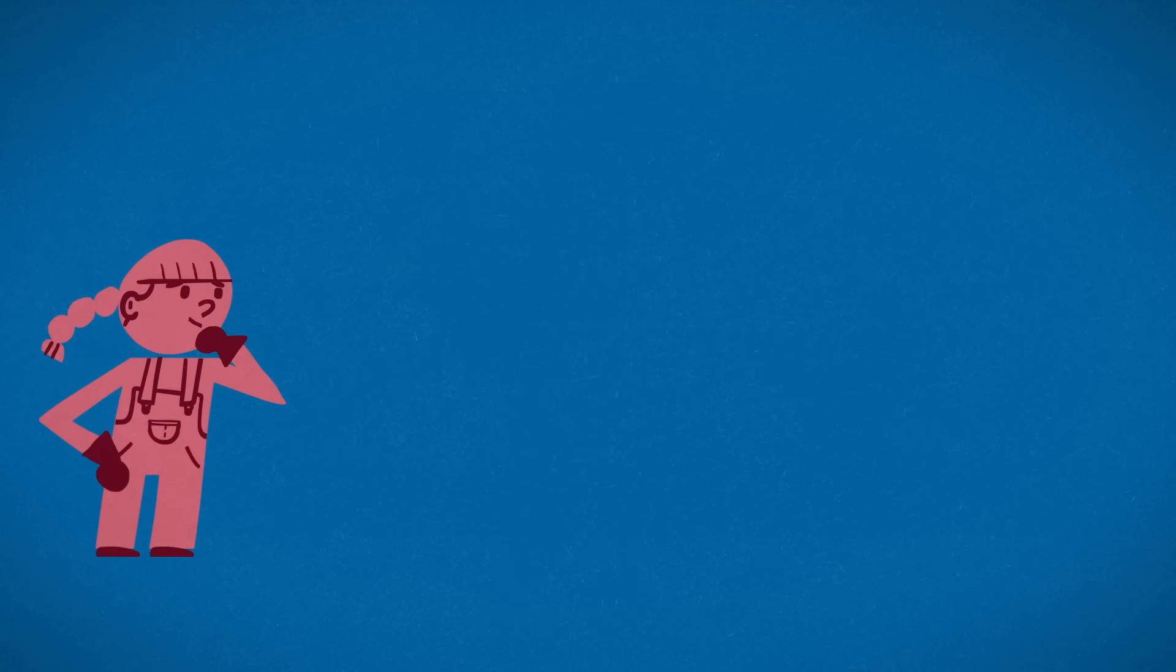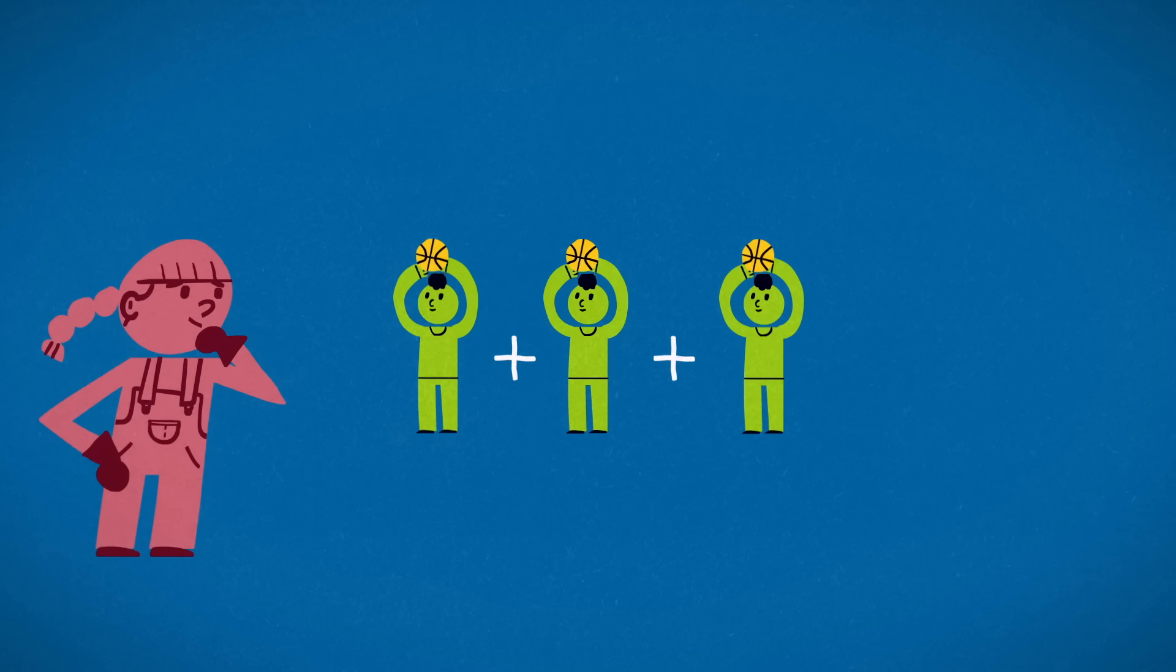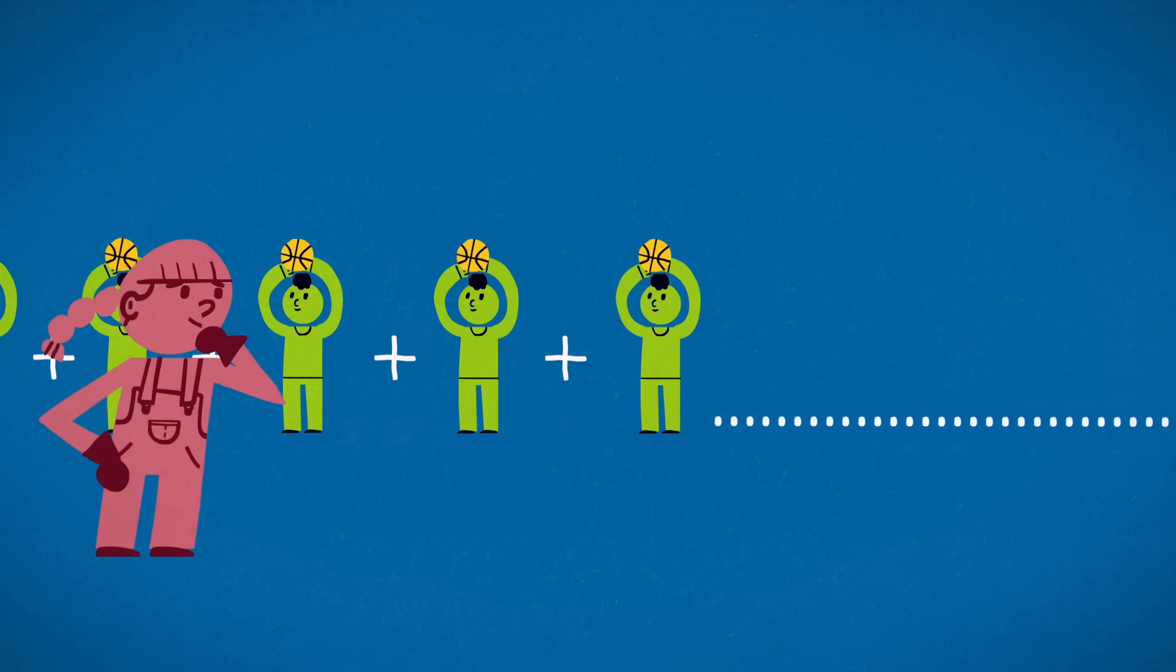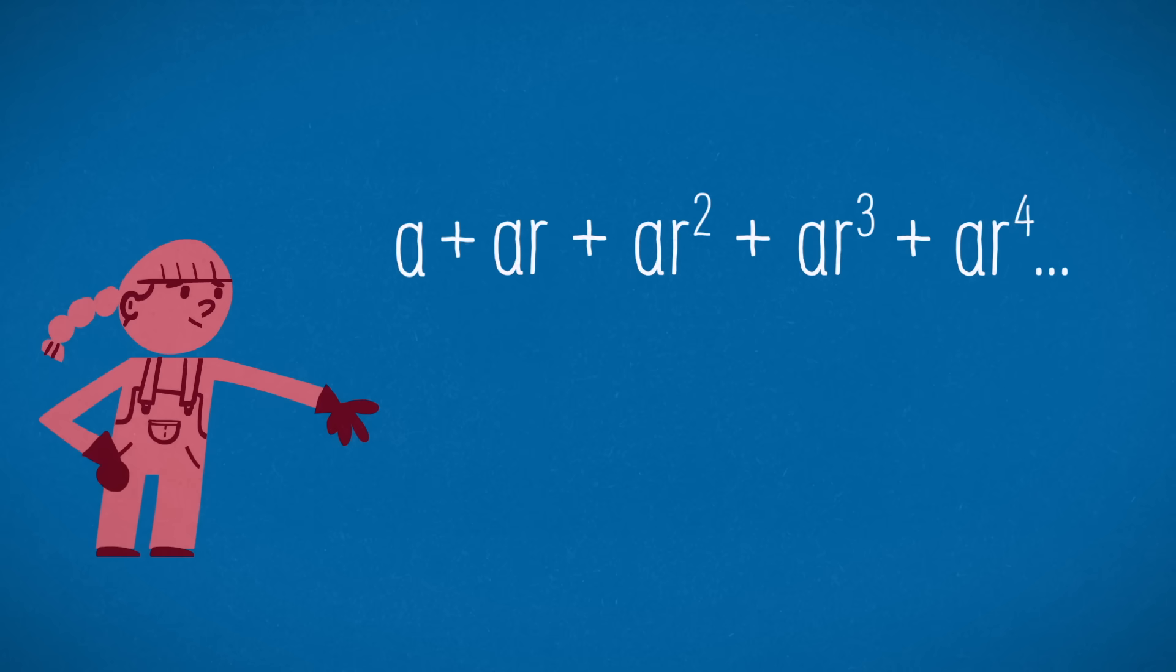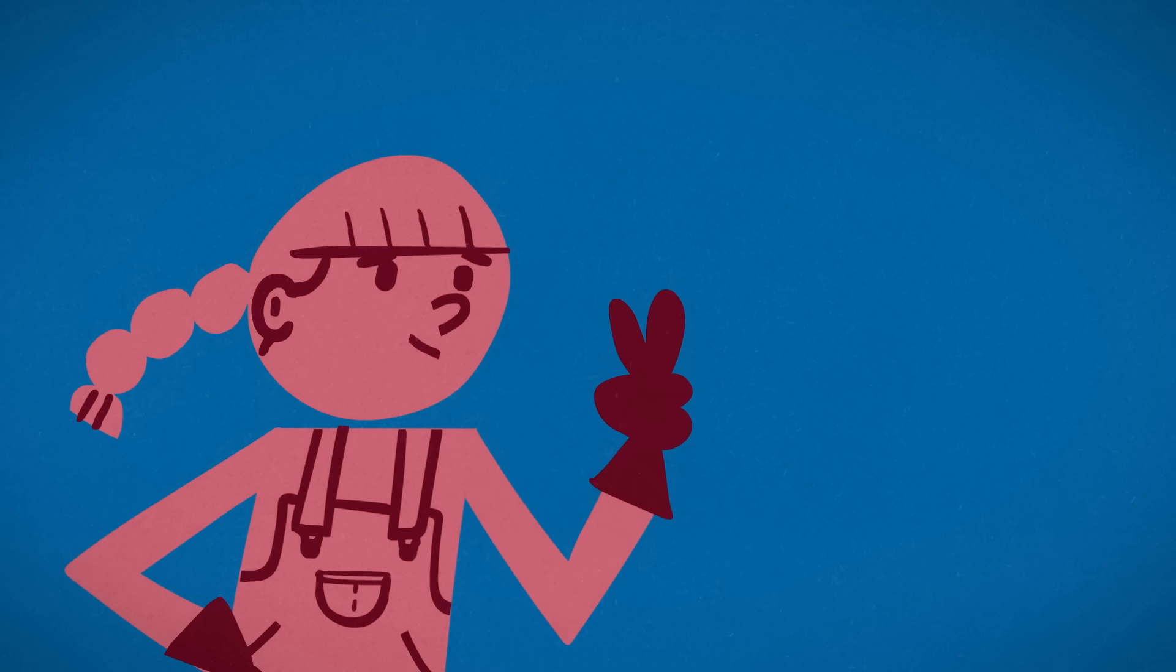One approach involves adding up every chance the human has to win using geometric series. A geometric series is an infinite sum of numbers, where each number is the previous number multiplied by a common ratio. Two facts about geometric series are useful here.